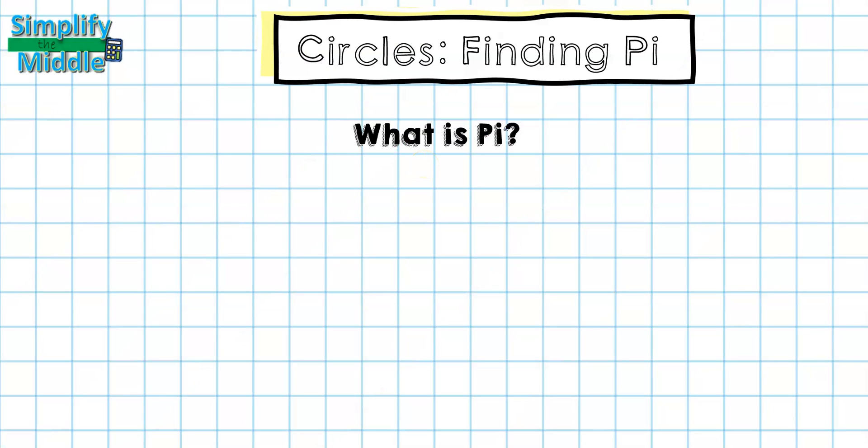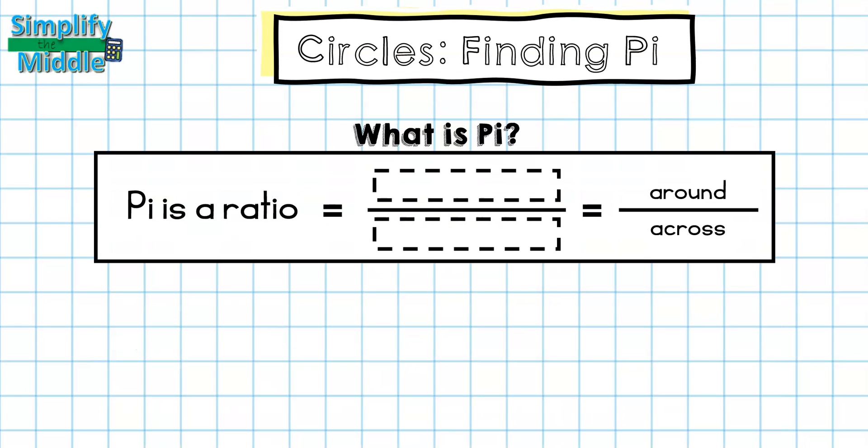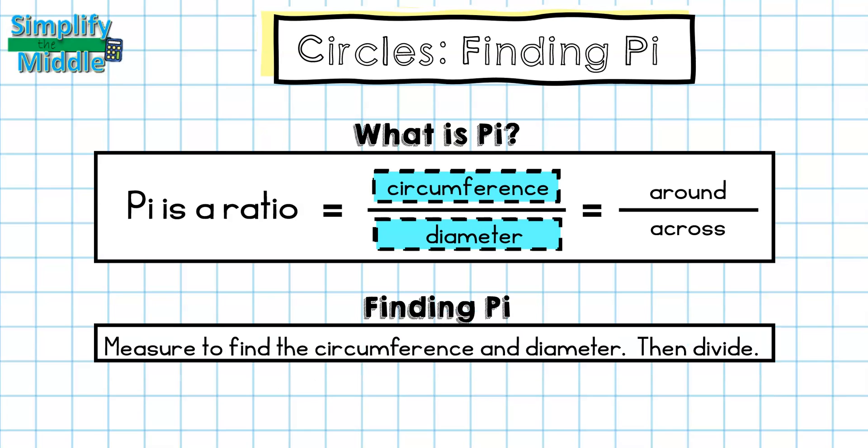So today you'll be testing out other circles to find what is pi. Pi we know now is our ratio. It's the ratio of circumference to diameter, or around to across the circle. For finding pi, measure to find the circumference and diameter, and then divide, and you should end up with an approximation. Let's see if your approximation is the same as 3.14.